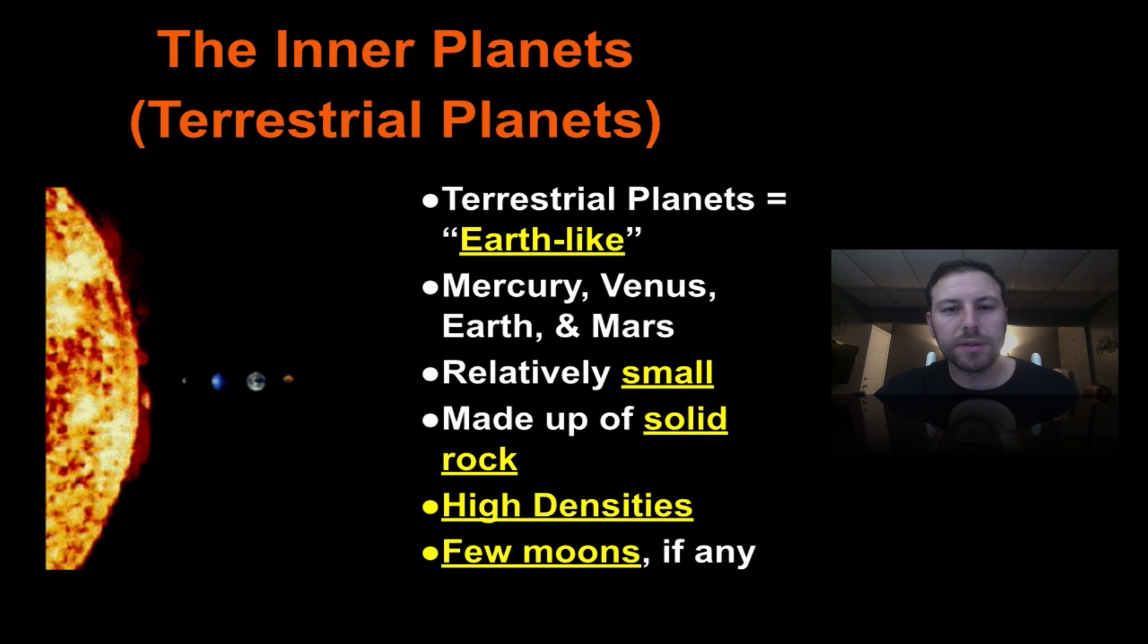As we go in, we have our first set of planets, our inner planets, also known as the terrestrial planets because they're earth-like planets. These are Mercury, Venus, Earth, and Mars. They're relatively small planets and they mostly are solid rock, have high densities and few moons, if any at all.